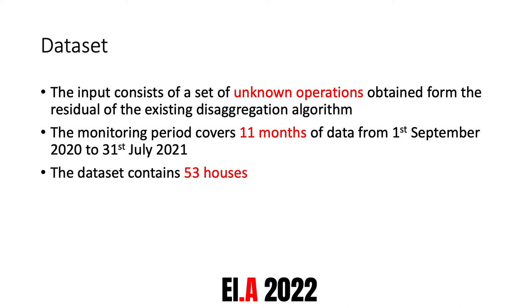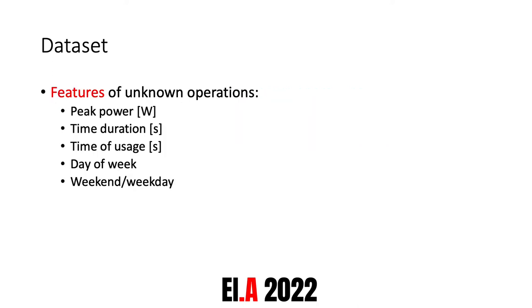The input consists of a set of unknown operations obtained from the residual of an existing disaggregation algorithm. The monitoring period covers 11 months, from 1st September 2020 to 31st July 2021, and the dataset contains a total of 53 houses. Every unknown operation is characterized by the following features: peak power in Watts, time duration in seconds, time of usage measured in seconds from the start of the day, day of week as an integer from 0 to 6, and a binary variable indicating whether the day is a weekday or weekend.